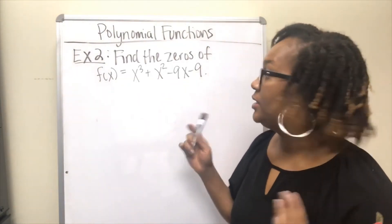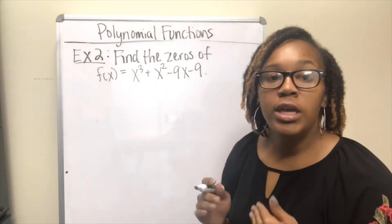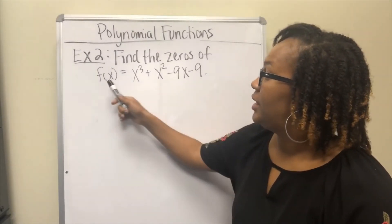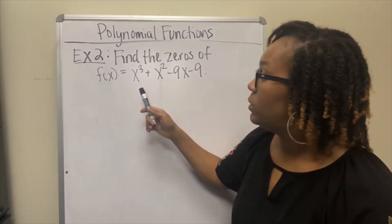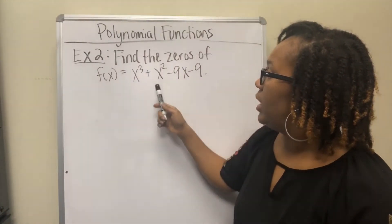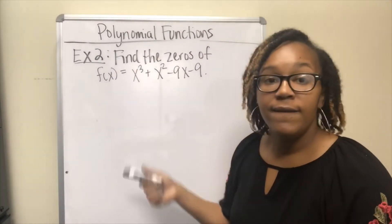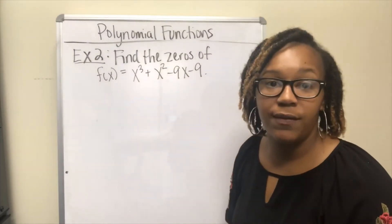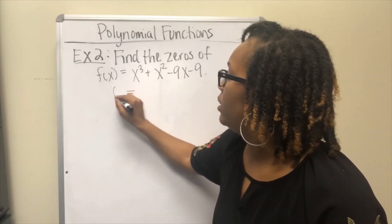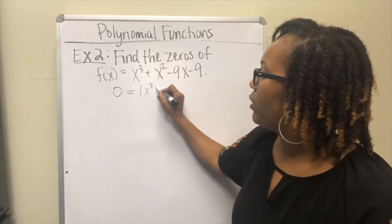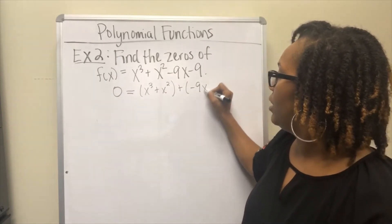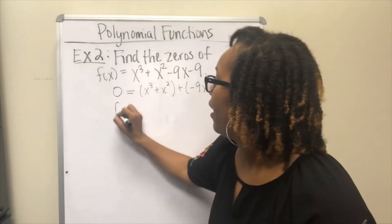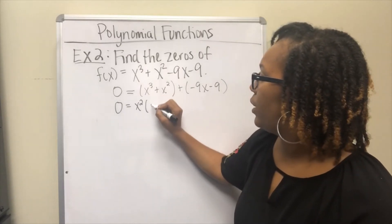For Example 2, we want to find the zeros of f(x) = x³ + x² - 9x - 9. Zeros are the same as x-intercepts — what makes the y value equal zero. Since this is a third-degree function with four terms, we can factor by grouping: group (x³ + x²) and (-9x - 9). The GCF of the first group is x², giving x²(x + 1). The GCF of the second group is -9, giving -9(x + 1).